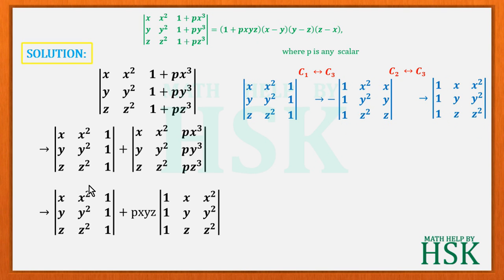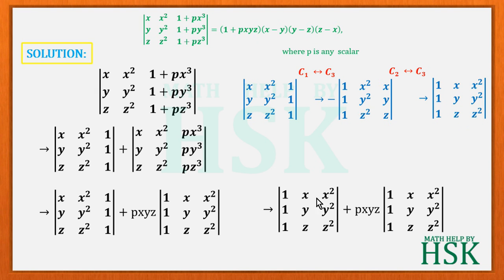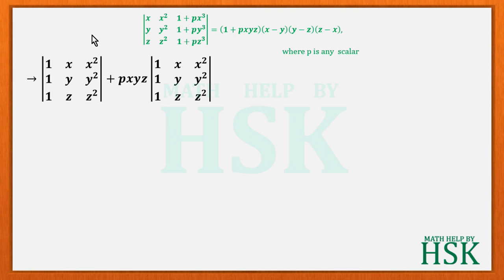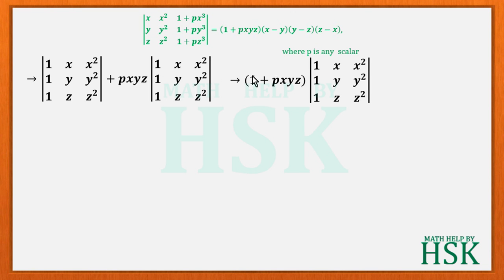Replacing the first determinant with (1, x, x²; 1, y, y²; 1, z, z²), we notice both determinants in the sum are identical. Taking this determinant as common, we are left with (1 + pxyz) times the determinant (1, x, x²; 1, y, y²; 1, z, z²).